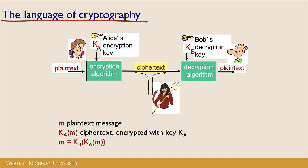Alice will send that ciphertext through her communication channel to Bob's decryption algorithm. Bob's decryption key, K sub B, will be used with his decryption algorithm to process that ciphertext, and out of the other end comes plain text that Bob can read. We've also got to be concerned with the idea that maybe Trudy is out there listening to that communication channel and trying to steal that ciphertext. When we talk about cryptography, we'll be using some mathematical terms, so let's talk about what these variables mean.